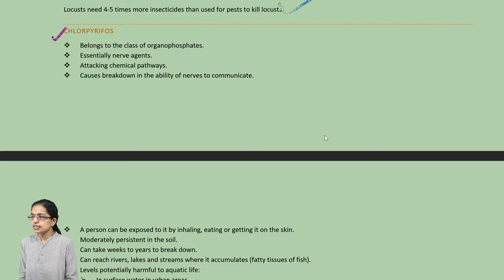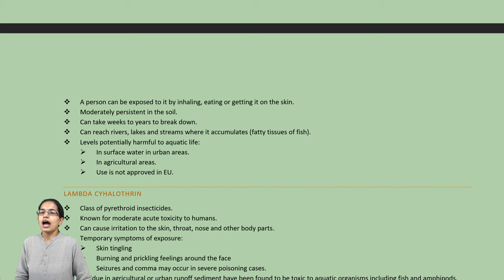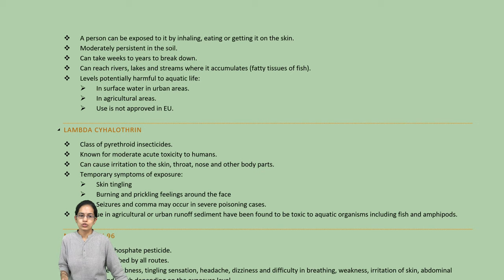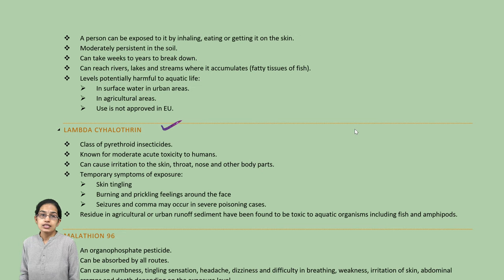Some of the important chemicals used are chloropyrifos, which is a kind of organophosphate. It basically affects the nervous pathway, breaks the chemical action, and causes an inability to communicate. It affects the locust population but is also harmful to aquatic life because it ultimately drains into water systems. Lambda-cyhalothrin is another group of pyrethroids and causes toxicity in human beings — skin, throat, and eye irritation.